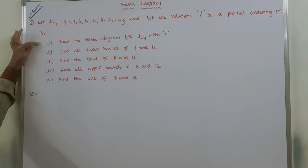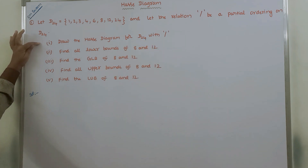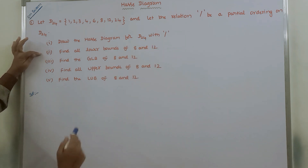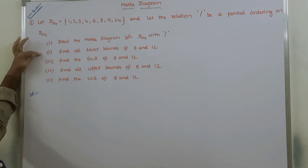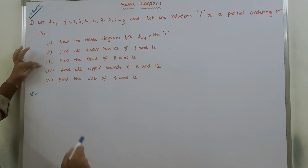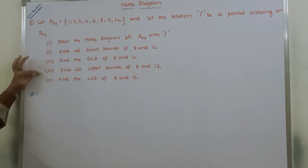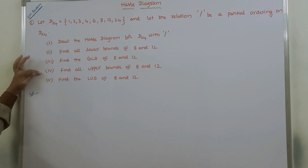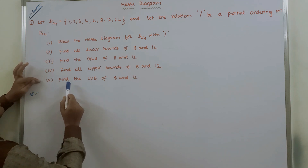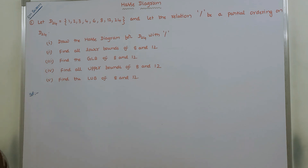The questions are: first, draw the Hasse diagram for D24 with the divisibility relation. Second, find all the lower bounds of 8 and 12. Third, find the GLB of 8 and 12. Fourth, find all upper bounds of 8 and 12. Fifth, find the least upper bound of 8 and 12.